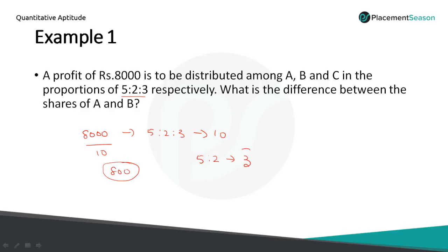So it means that there is a 3 part difference between A and B. So multiply 1 part by the difference, and you will get 2400. So you can use any method to solve this problem.